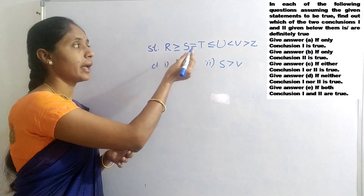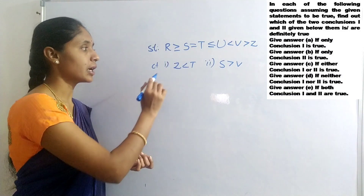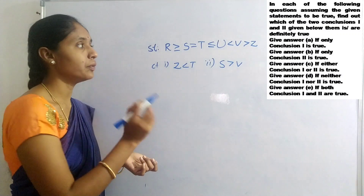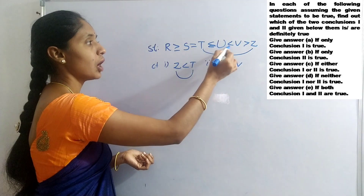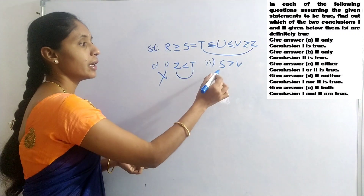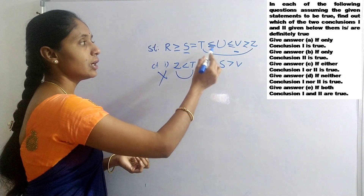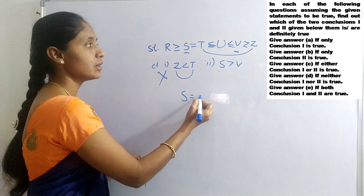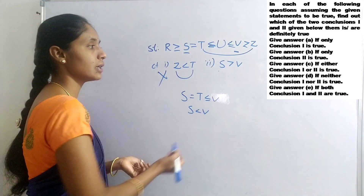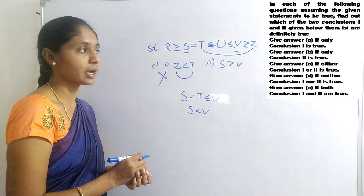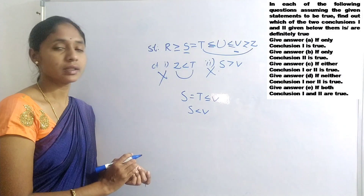Question 4: R greater than S equals to T less than or equals to U less than V greater than Z. Conclusions: Z less than T; S greater than V. For Z and T, opposite signs — no relation. For S and V: tracing S equals to T less than or equals to V, we can conclude S less than V. But the conclusion states S greater than V, which is wrong. Neither conclusion 1 nor 2 is true.